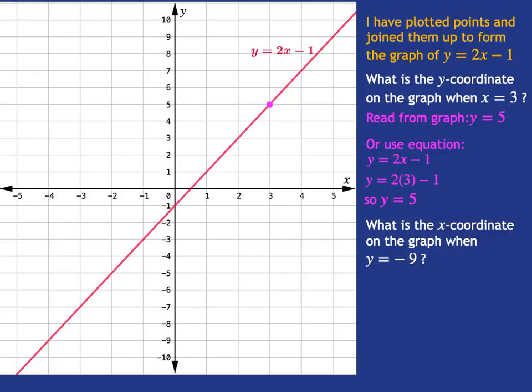All right, what if I want to know the x coordinate on the graph when y is negative 9? Well, again, I want to see where we are on the graph when you've got a y value of negative 9. So I go across and I see it's there. That point has a y value of negative 9. Now I want to know what that point's x value is, right? How far left is that point? Well, I can just look up and see, oh yes, that point is 4 units to the left. It's at negative 4. And so reading from the graph, I get x is negative 4.